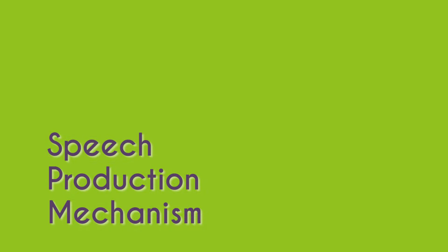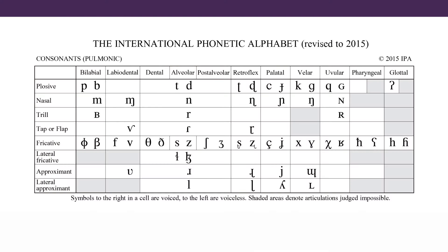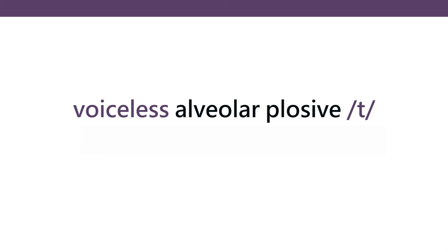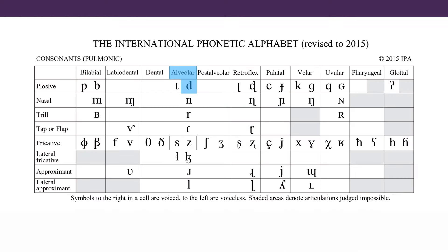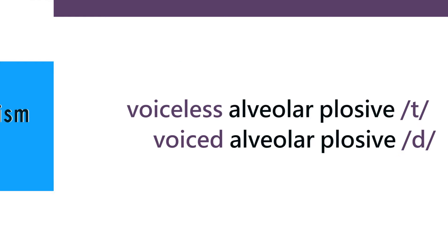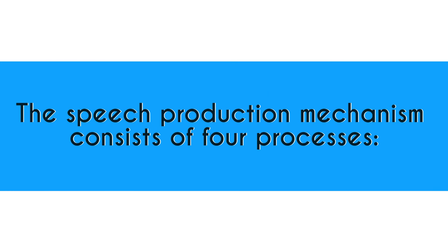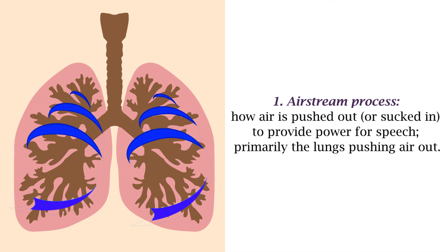Returning to the title of the video: if you want to explain the speech production mechanism for a sound — say the voiceless alveolar plosive 't' or the voiced alveolar plosive 'd' — you have to clarify four things. The speech production mechanism has four processes. The first process is called the airstream process: how air is pushed out or sucked in to provide power for speech — are you pushing air out or sucking air in?